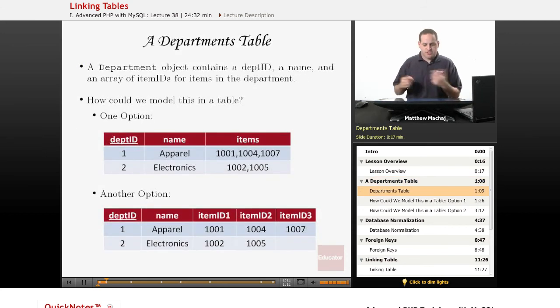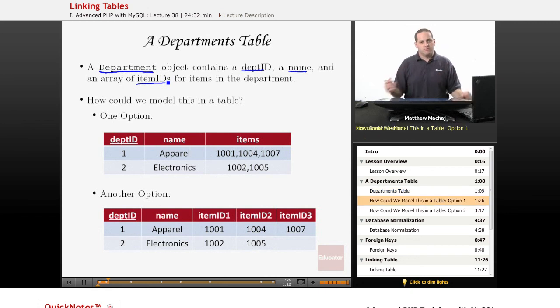So basically, we know that a department object from our web application contains, well, we know that the object itself has three properties. It has a department ID, a name, and then it has an indexed array of item IDs where each item ID represents an item in a department.